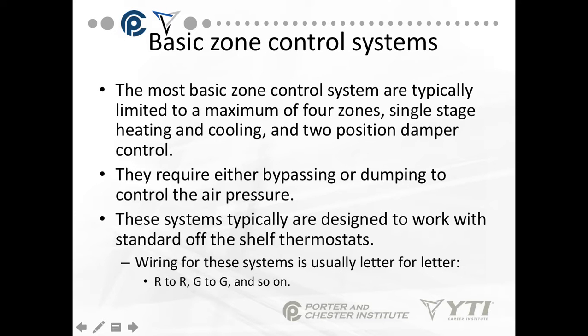The basic control system is usually limited to a maximum of four zones, single-stage heating and cooling, and two-position damper control. In other words, the damper is either open or closed. They require either bypassing or dumping to control the air pressure. The systems are designed to work with standard off-the-shelf thermostats.